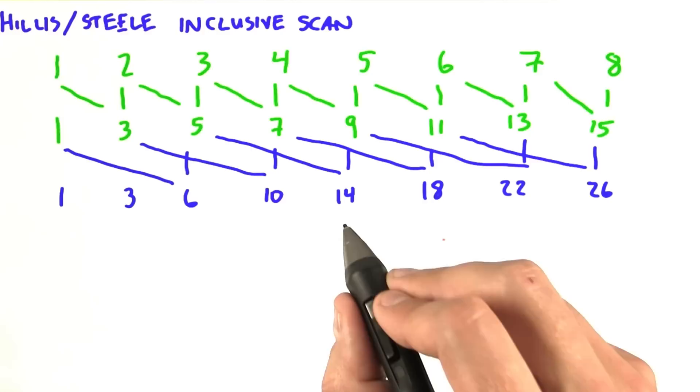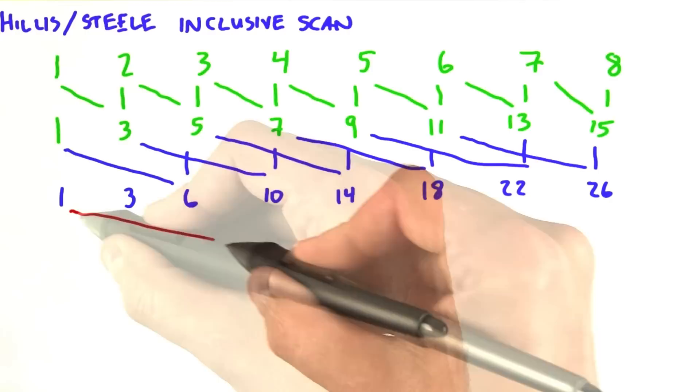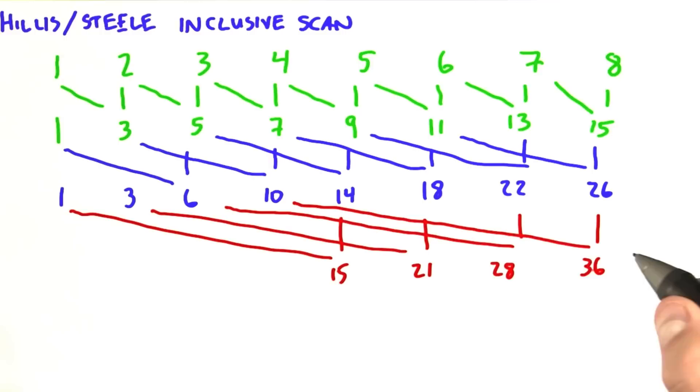Final stage, now you're going to add yourself to your neighbor 4 to the left. So we add 1 and 14, giving us 15. We add 3 and 18, giving us 21, and so on. And again, if you don't have a neighbor 4 to the left, then you'll just copy your own value down.